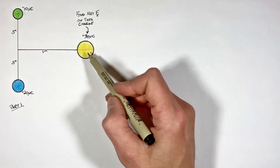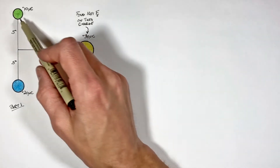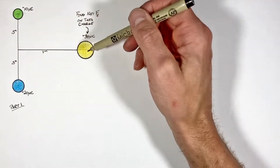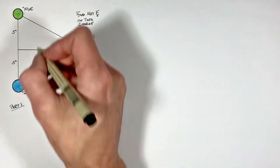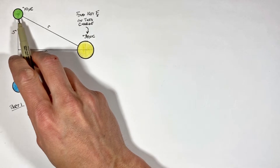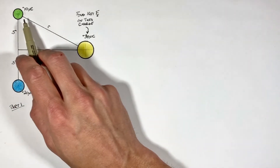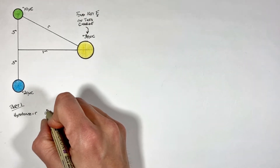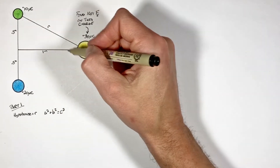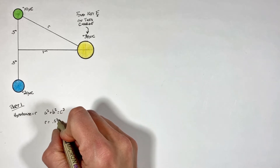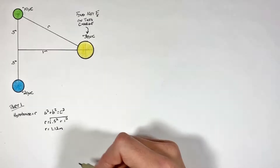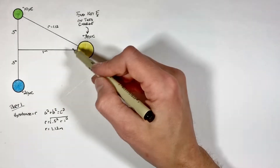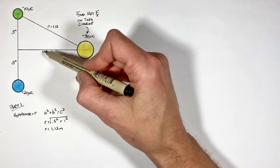Coulomb's law tells us that the electric force between any two charges is a function of the distance between those two charges. So the first thing we're going to do is work out the distance from one charge to the next. The distance from charge to charge here is simply the hypotenuse of this right triangle. Using the Pythagorean theorem we can solve for this hypotenuse length and find these two charges are 1.12 meters apart.